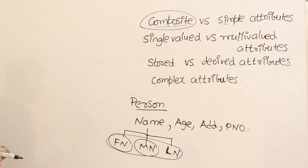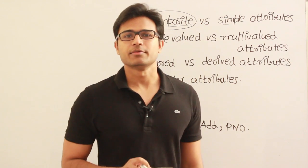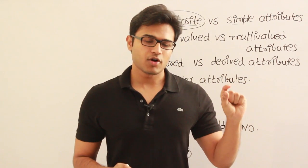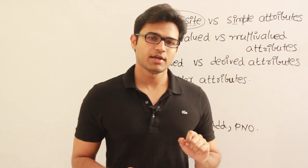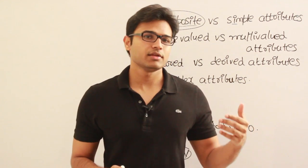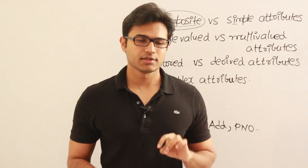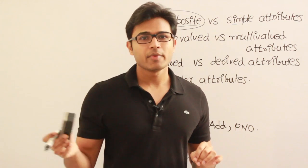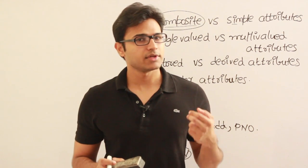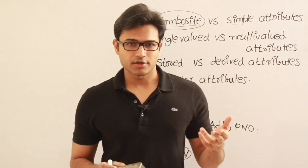Simple attributes cannot be divided further. Sometimes an entity might not have any value for a particular attribute — for example, you might not have a middle name. In order to save data for such an entity, we introduce null values. Null values indicate either that the value does not exist or the value is not applicable. For example, phone number is applicable to you, but you might not have a phone — that means the value does not exist. Not applicable means the field simply doesn't apply, like having no middle name at all.